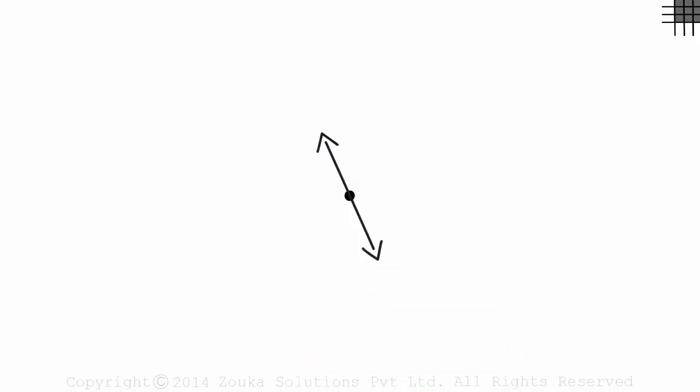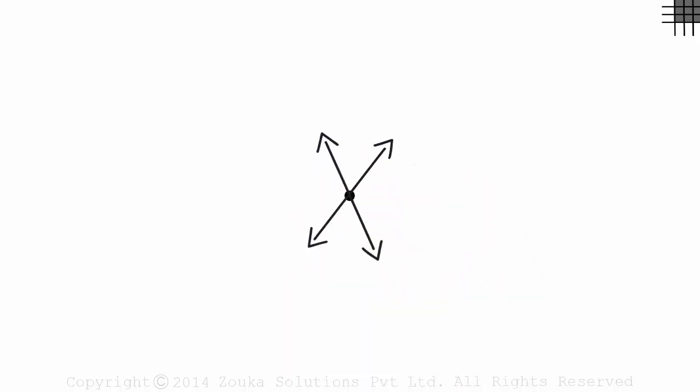We can draw one like this, another one like this, and many more. Infinite lines can be drawn through one point.